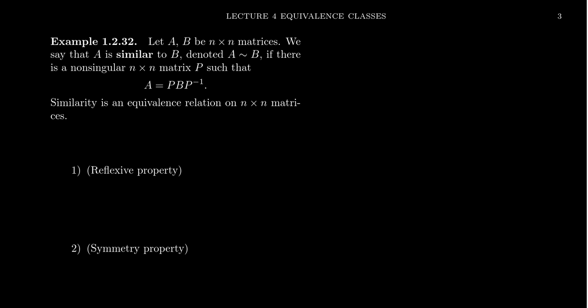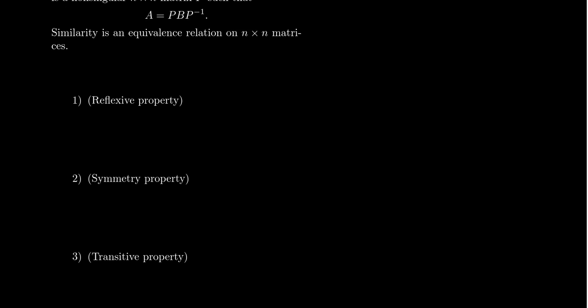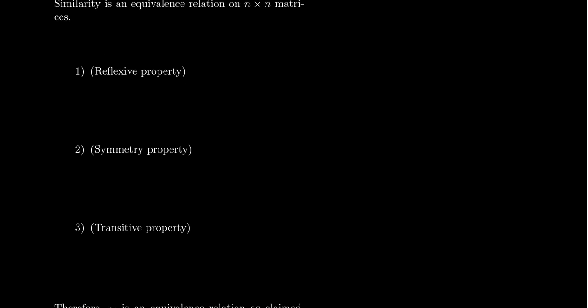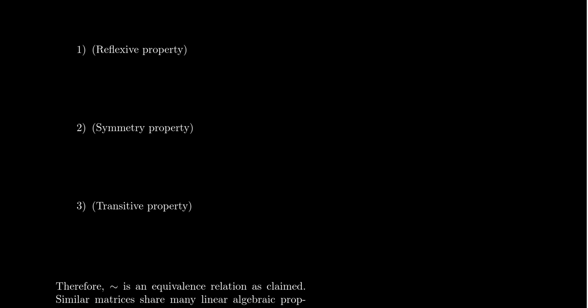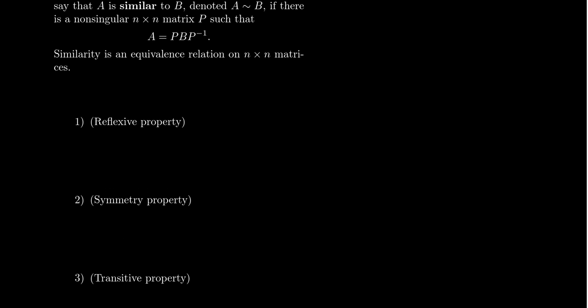So how do we show that this is an equivalence relationship? To show something is an equivalence relationship, the proof always has the following template: we prove the three properties, the three axioms — the reflexive axiom, the symmetric axiom, and transitivity. And so we use the definition of the relationship to show reflexivity.